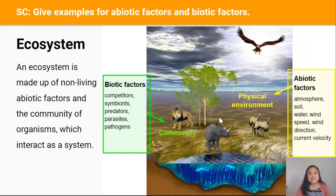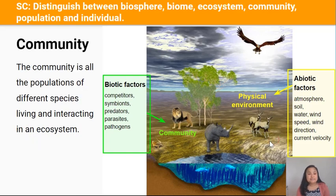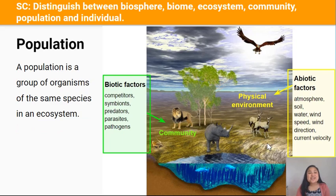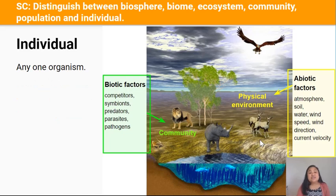Within these biomes are several ecosystems. Ecosystems are made up of non-living abiotic factors and the community of organisms which interact as a system. The community is all of the populations of different species, so a community is made up of many different populations. A population is a group of organisms of the same species living in an ecosystem, and an individual is any one organism.